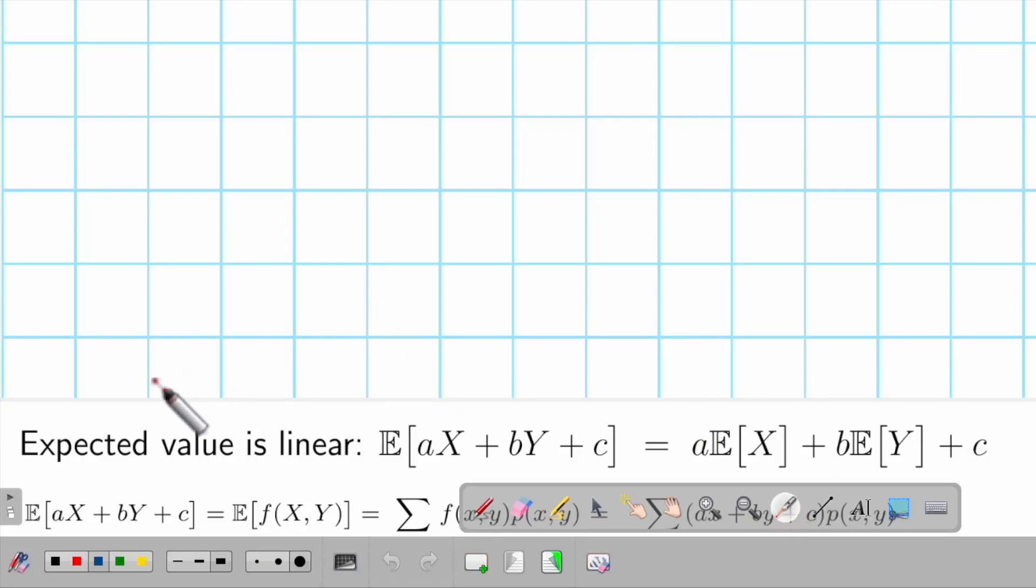Okay, now we are going to prove the first property of expected value: that expected value is linear. So the expected value of aX + bY + c will be that a we can take it out, the b we can take it out, and then X and Y we can take separately, and c is a constant we do nothing.